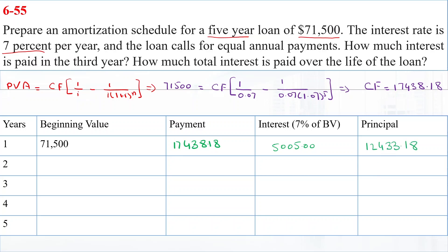In Year 2, the beginning value is $71,500 minus $12,433.18, which equals $59,066.82. The payment remains the same at $17,438.18. The interest is 7% of $59,066.82, which equals $4,134.18. The principal payment for Year 2 is $13,303.51.